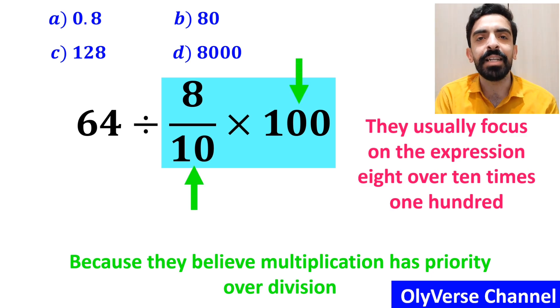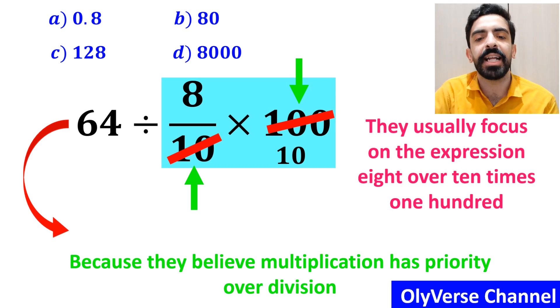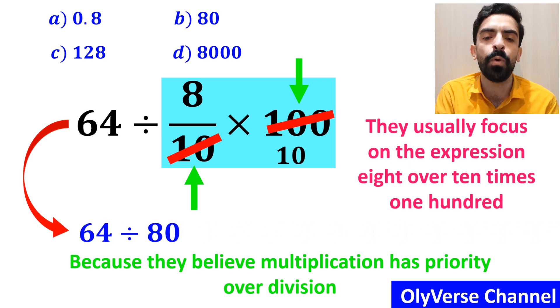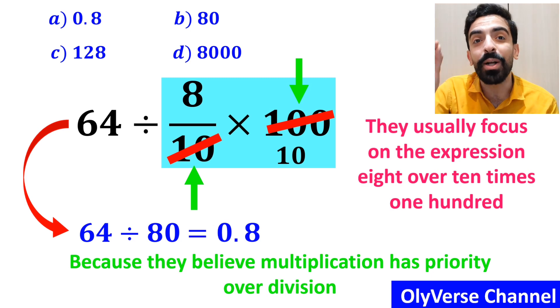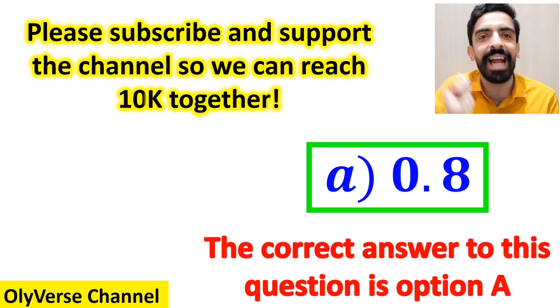As you can see in the image, they very easily cancel out 100 with the 10 in the denominator, and rewrite this expression as 64 divided by 80, which ultimately gives them the answer 0.8. Without any hesitation, they quickly say that the correct answer to this question is option A.